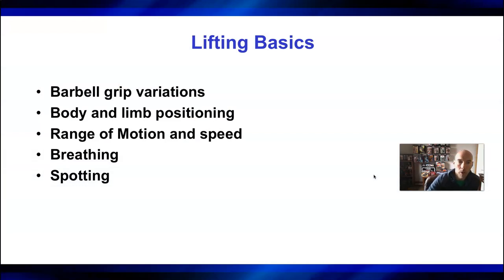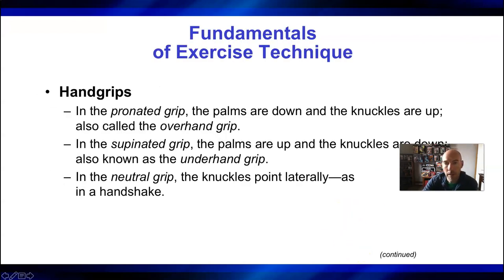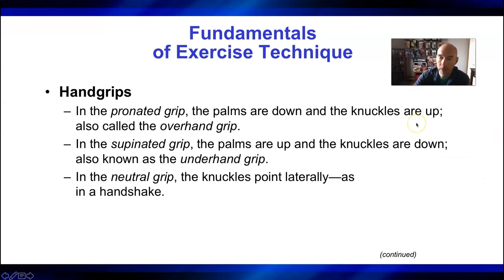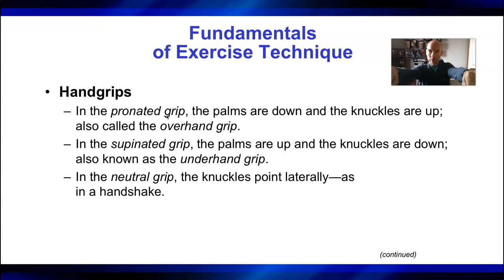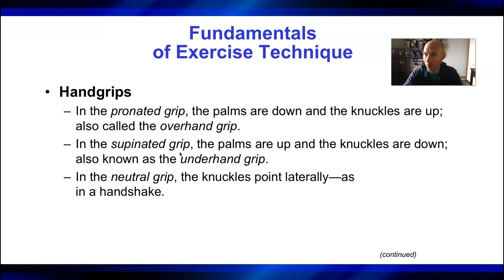Starting with gripping — this mostly applies to barbell training. A pronated grip is where your palms are down, also called an overhand grip. A supinated grip is an underhand grip. For a barbell bench press, you're always going to use a pronated grip. For something like a pull-up, you may use both pronated and supinated. An alternating grip is where one hand is pronated and one hand is supinated — your strongest grip is actually the alternating grip. A lot of people who deadlift use an alternating grip because you get a much stronger hold that way.